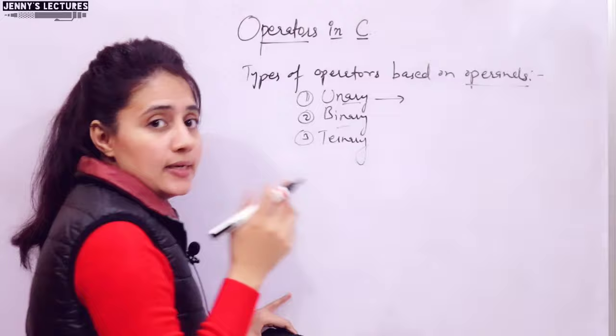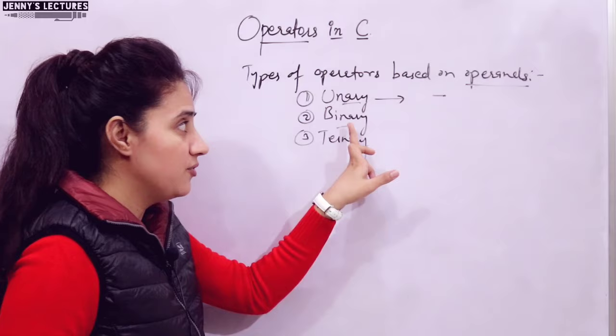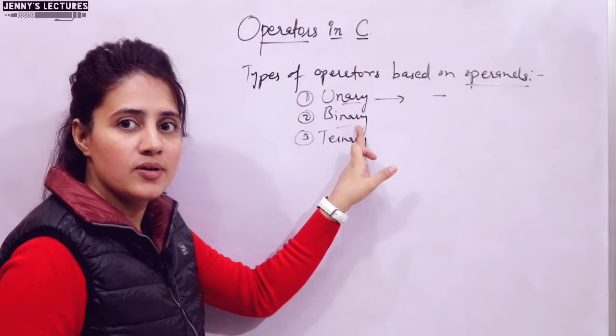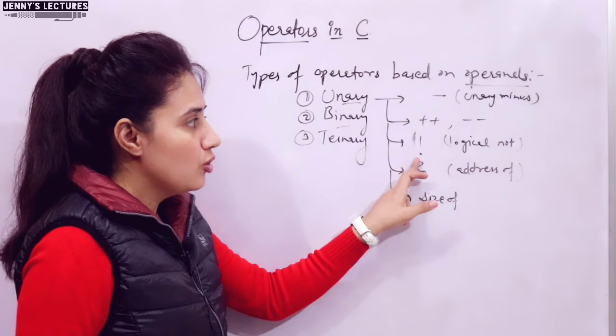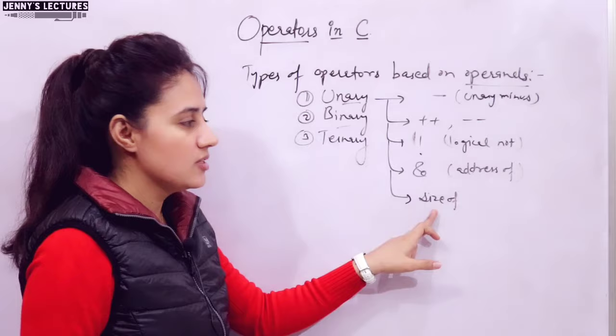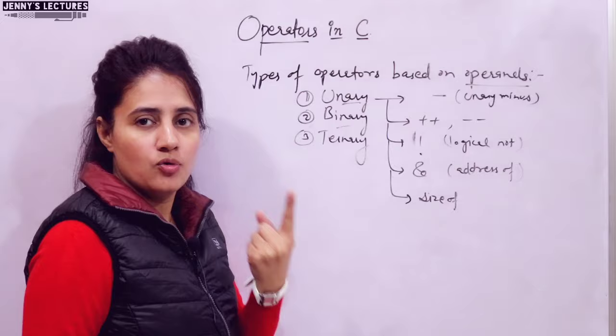Unary operators include: unary minus, increment operator, decrement operator, logical NOT operator, address-of operator, and sizeof operator. Note that unary minus is different from binary minus — both use the minus symbol but they differ in usage. All these operators require only one operand.